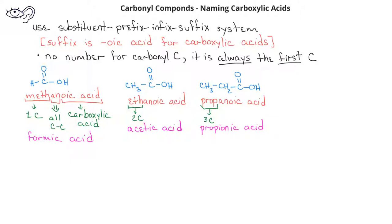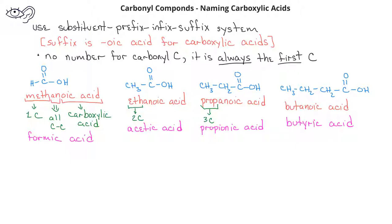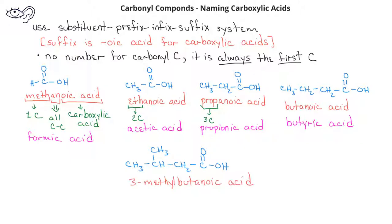A four-carbon chain, including the carbonyl carbon, could be named butanoic acid, or it could be referred to by its common name, butyric acid. If we have a substituent on butanoic acid — for example, on the third carbon — this would be named 3-methylbutanoic acid.